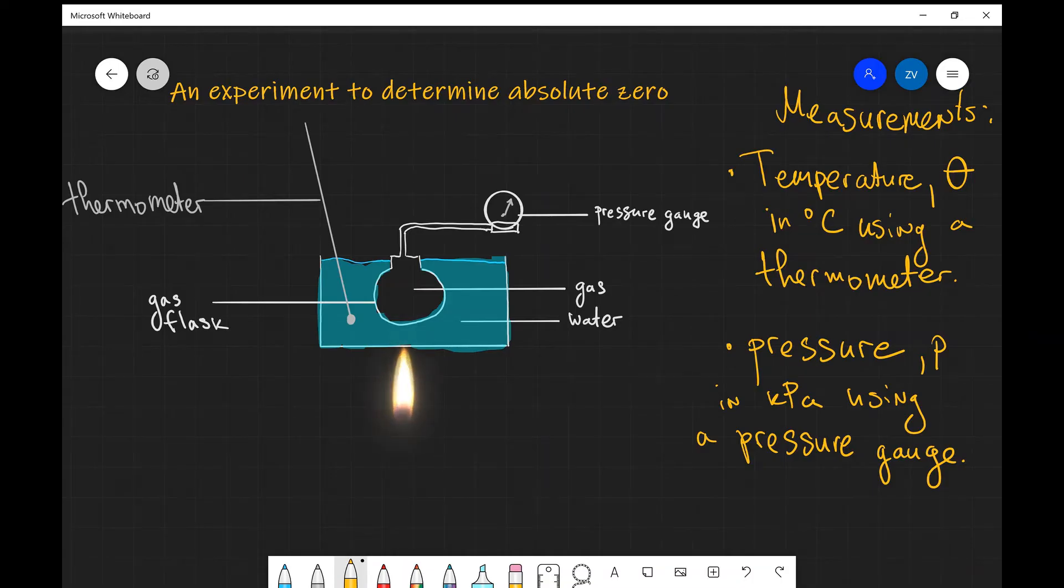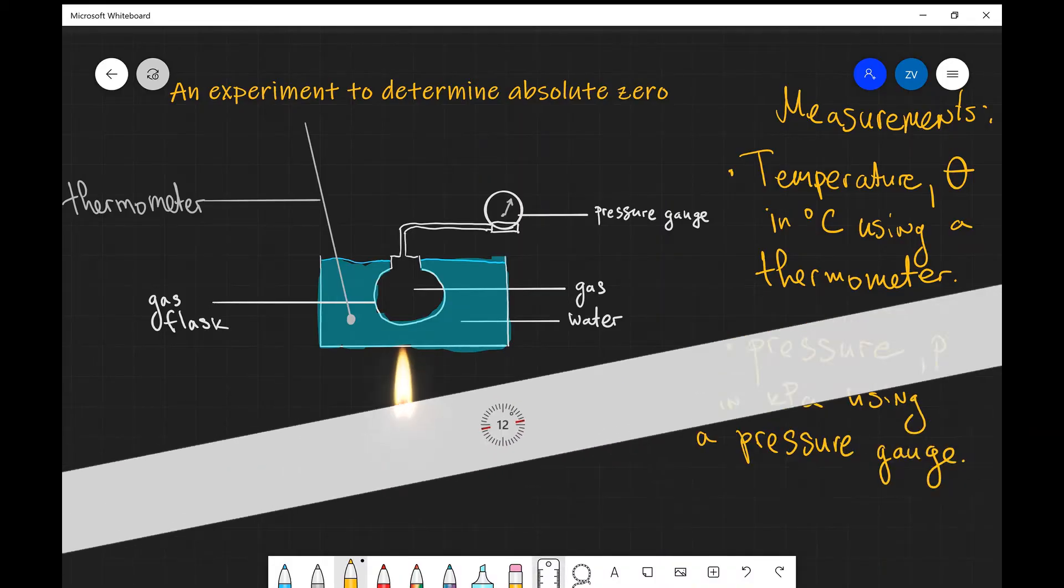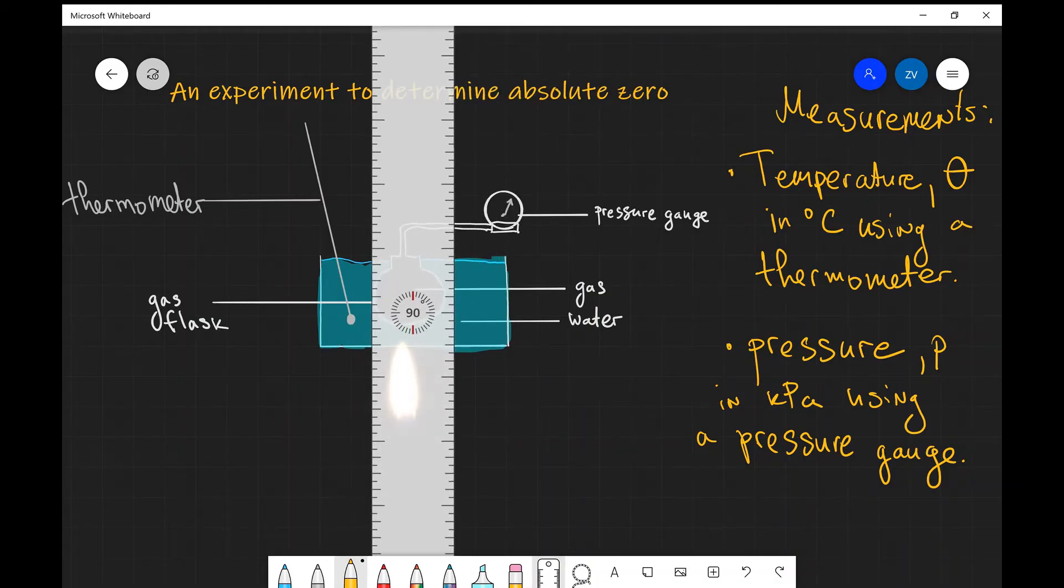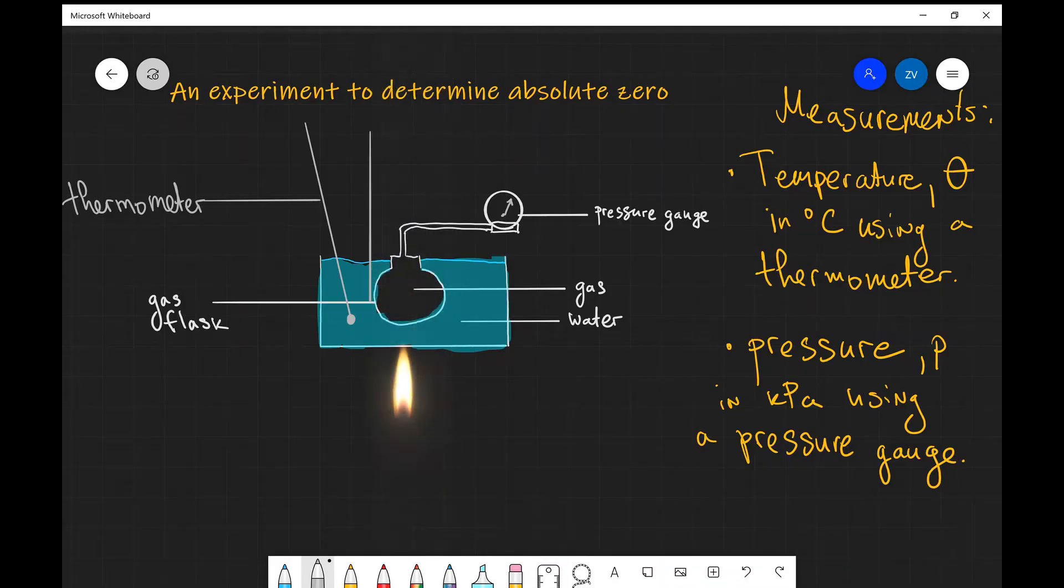One way of making this experiment as accurate as possible would be to continuously be stirring. So in fact one thing I would just add to the diagram is normally there's some space for a stirrer. And the reason for that is because as we are heating this up you're going to get some pockets of hot or cold water, sometimes they might be icy, so just stirring this makes sure that there's uniform temperature throughout this water bath.